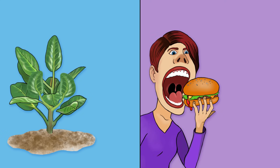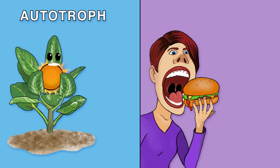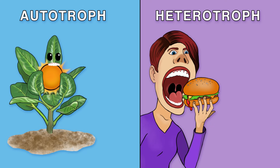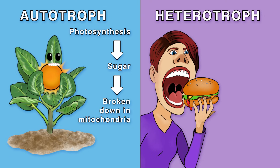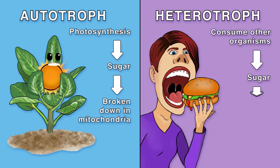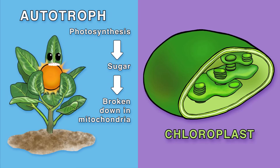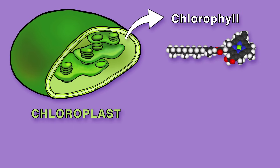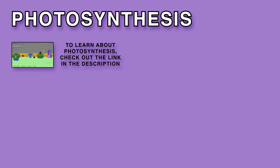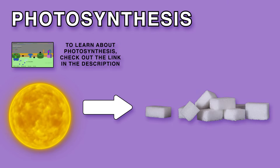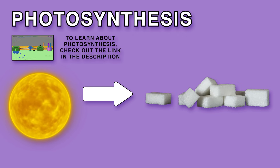Another important difference between animals and plants is how they obtain their energy. Plants are autotrophs, which means that they produce their own food. Meanwhile, animals are heterotrophs, meaning that they must ingest their food. Plants produce sugars through photosynthesis and then break down the sugar to produce energy. Animals consume other organisms such as plants to obtain sugar, which they then also break down to produce energy. Plants are autotrophs thanks to special organelles called chloroplasts, which are full of chlorophyll, a green pigment that captures light energy to drive the reactions in photosynthesis. Photosynthesis is the process by which plants use the sun's energy to make sugar. Once the sugar is made, it gets broken down in mitochondria.